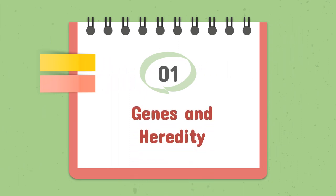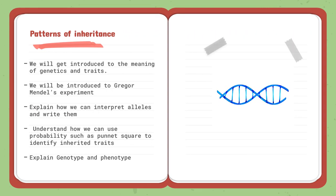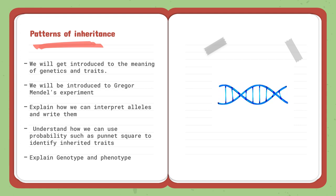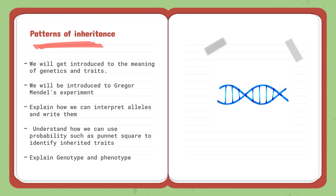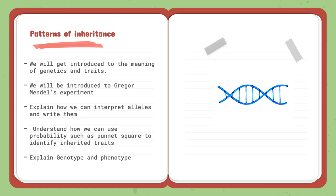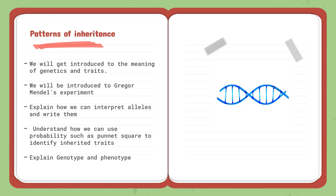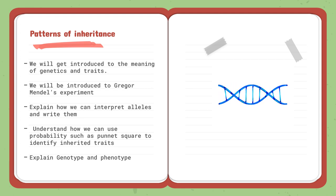For genes and heredity, we have one topic divided into three lessons. We will start with the first lesson: patterns of inheritance. In this lesson, we will get introduced to the meaning of genetics and traits — what are genes, what are traits, and how are they inherited. We will be introduced to Gregor Mendel's experiment. Mendel was a monk who used to grow pea plants, and he observed that pea plants grow in different traits depending on different characteristics.